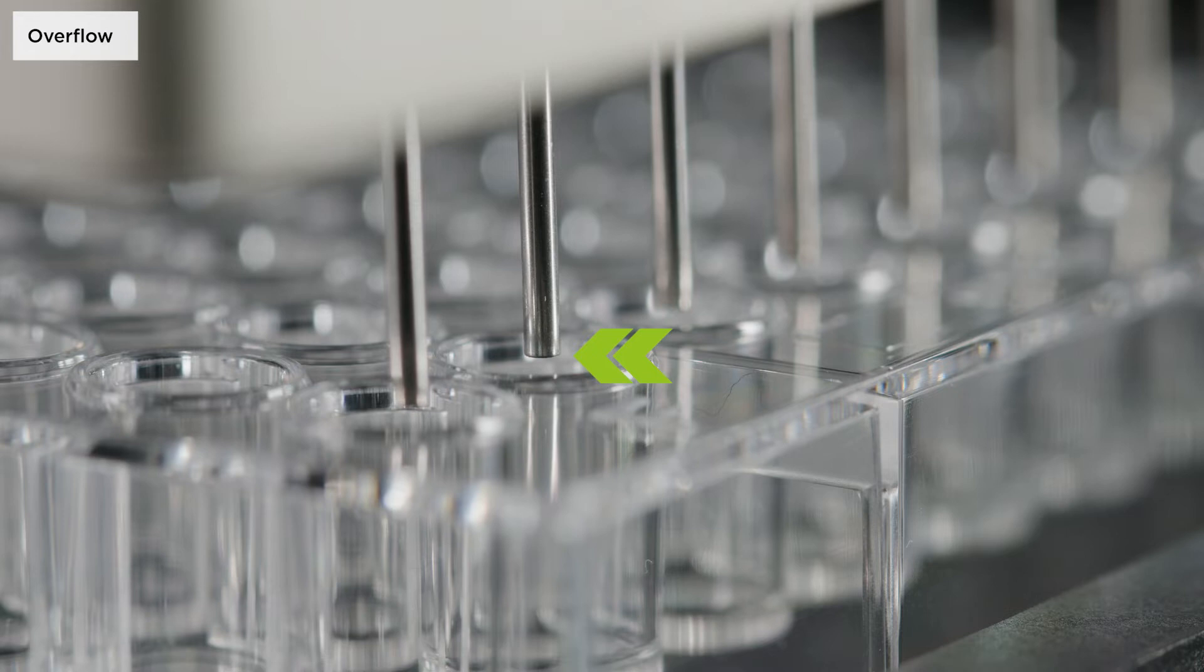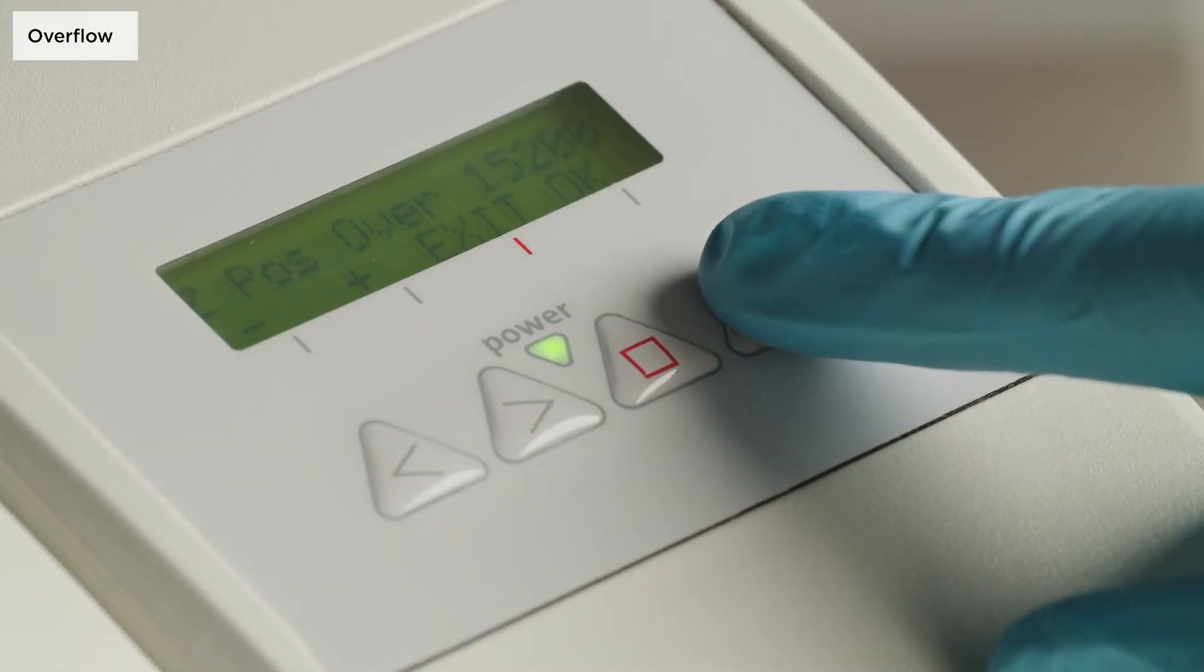The typical wash head position for overflow washing sets the aspiration needles close to the rim of the well. Once the position is correct, confirm with OK.